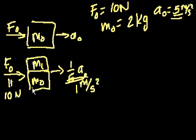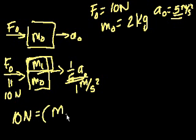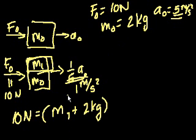And then we could solve for what the new mass is. We have force, which is 10 newtons, equals the sum of the masses, so m1 plus m sub 0, but m sub 0 we already learned is 2 kilograms, times the acceleration, times one-fifth a sub 0, which is 1 meter per second squared.